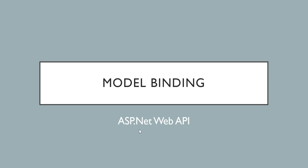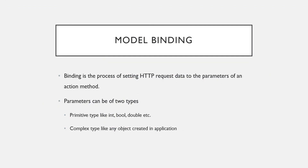Hello friends, welcome back. We are studying ASP.NET Web API. In this video we are going to learn the concept of model binding. Binding is the process of setting HTTP request data to the parameters of an action method. Whenever we request any HTTP method, we usually send data through that request, and in model binding, whatever request data you have set, we have to map it onto the parameters of an action method.